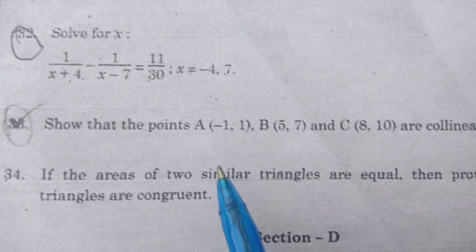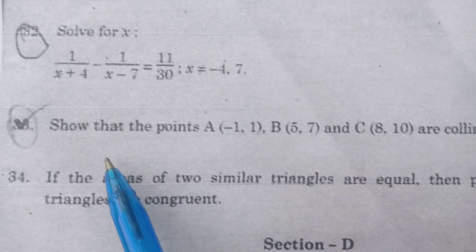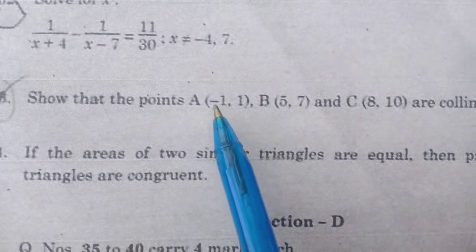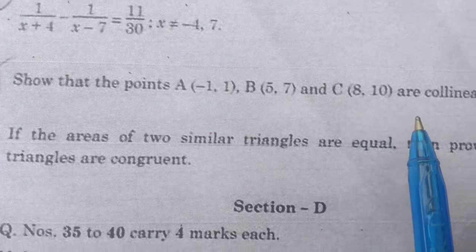Hi students, today I am going to discuss a question paper of class 10 CBSE mathematics. Show that points A(-1, 1), B(5, 7), and C(8, 10) are collinear.